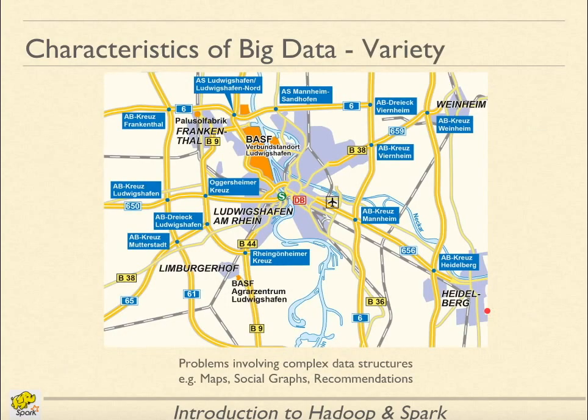Imagine you have to find the fastest route on a map. Since the problem involves enumerating through many possibilities, it is complex, even though the map size would not be too huge. Data could be termed as big data if either volume, velocity, or variety becomes impossible to handle using traditional tools.